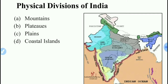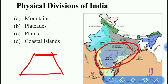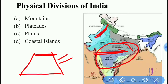A plateau is basically a top-flat land found in the central part of India. The Aravallis are located in the north-western part of the plateau. Narmada and Tapti are important rivers of the plateau region, and they are basically originated from the Vindhyan and Satpura ranges. Western Ghats and Eastern Ghats form the western and eastern boundaries of the plateau respectively.